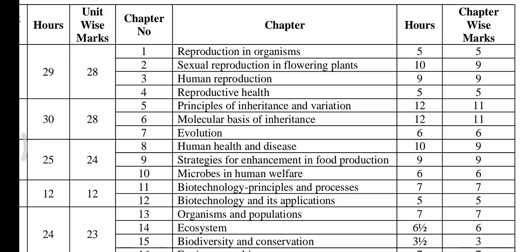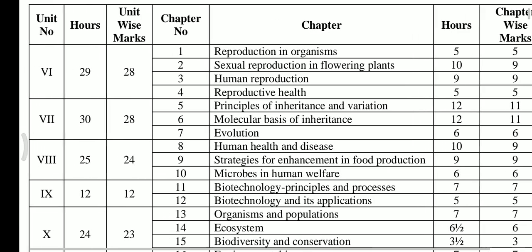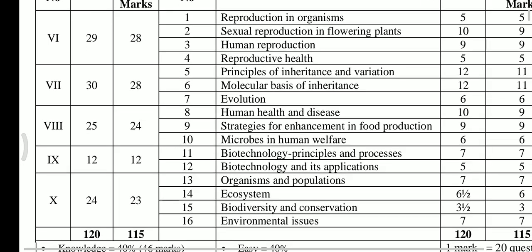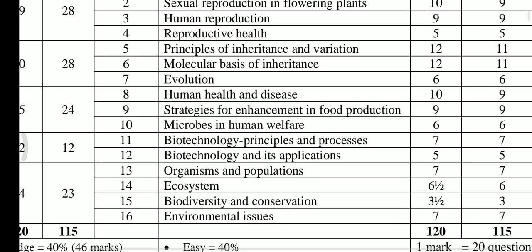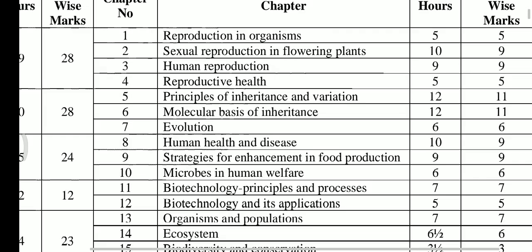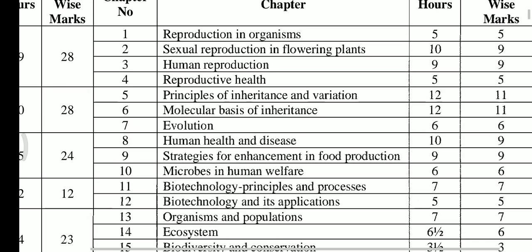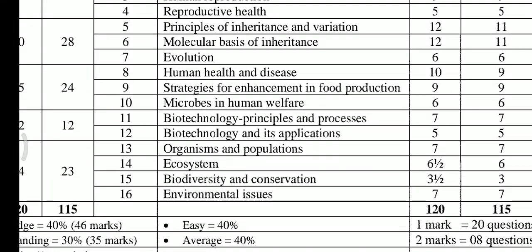Coming to Unit 7, it is also for a total of 28 marks. Chapter 5, Principles of Inheritance and Variation, is for 11 marks. Molecular Basis of Inheritance is also for 11 marks.